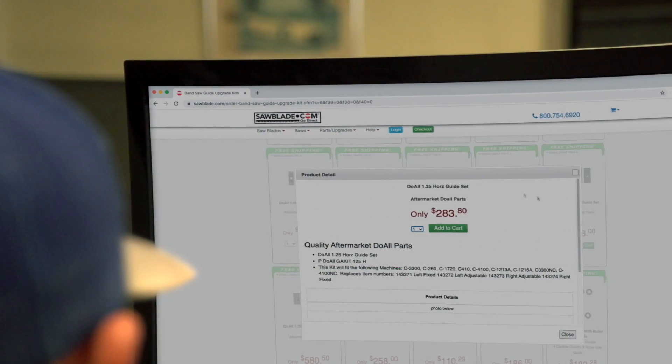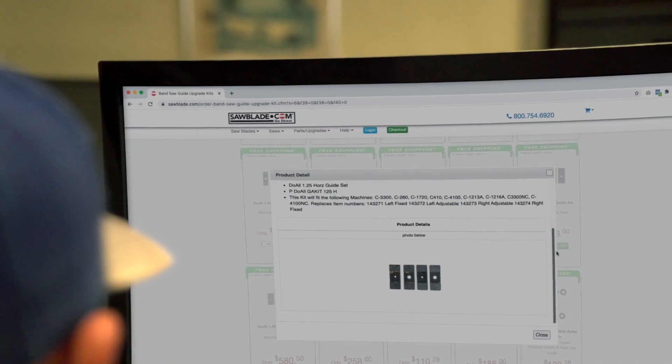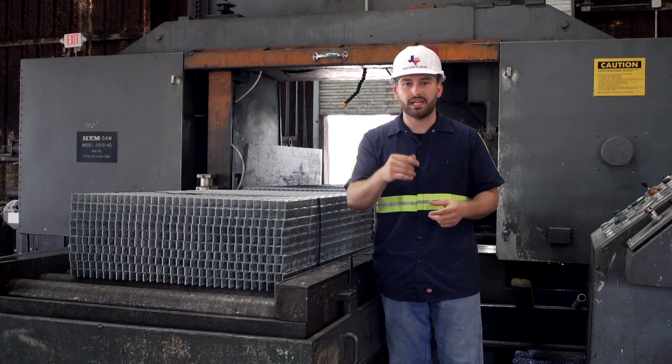You can reach out to SawBlade.com for all your industrial carbide guide needs. They're fast and affordable and you can get them with same-day shipping.